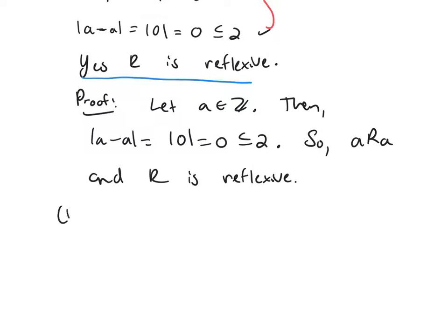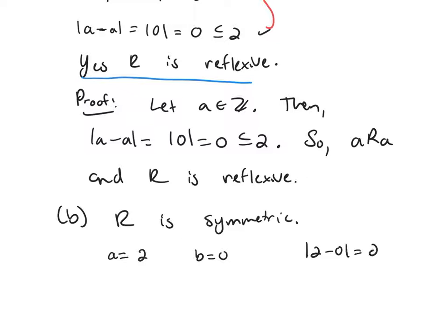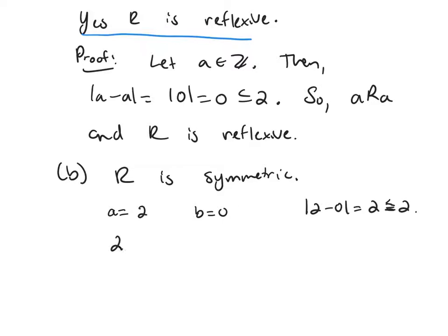Now let's ask: is R symmetric? Prove or disprove. Think about what symmetric means. You might want to take some examples. If A is 2 and B is 0, the absolute value of 2 minus 0 is 2, which is less than or equal to 2. So 2 is related to 0. But we can ask about the reverse.